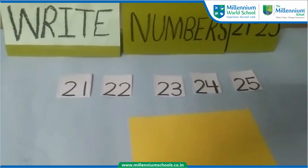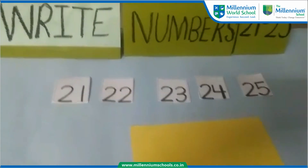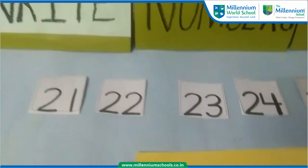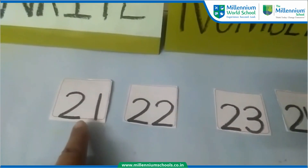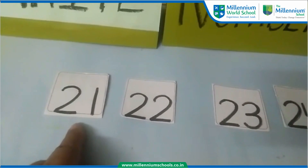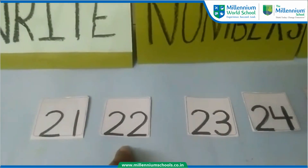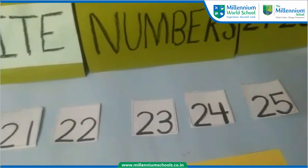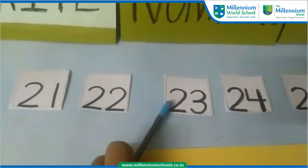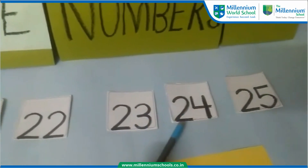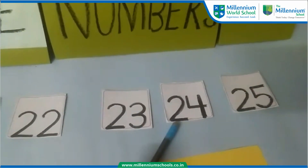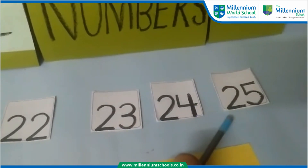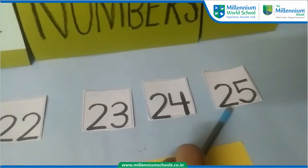So before going ahead, we will do the recap of numbers. So please say: 20 and 1 — 21. 20 and 2 — 22. 20 and 3 — 23. 20 and 4 makes 24. 20 and 5 makes 25.